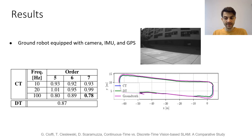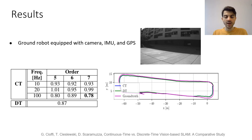In a last set of experiments, we evaluate the two SLAM formulations on a ground robot equipped with a camera, an IMU, and a GPS. Again, the sensors are time-synchronized. Also in this case, the two SLAM formulations produce similar results.